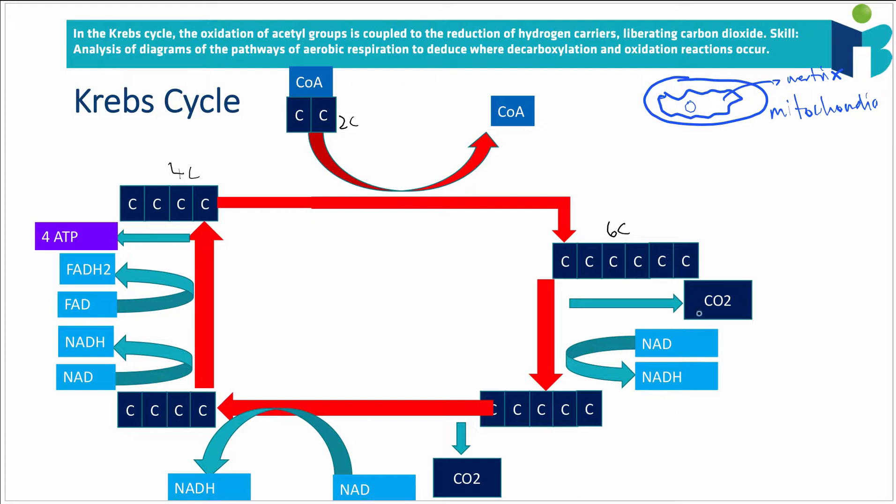And this six-carbon molecule is then going to undergo a process where it loses a carbon molecule to form CO2. Now, we said in the link reaction, this is called decarboxylation, right? Because it's losing carbon, so it's decarboxylation.